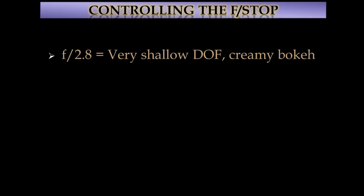Controlling the f-stop: f/2.8 is a very shallow depth of field — it gives a creamy bokeh. What does that mean? At f/2.8, you're actually letting in the most light your lens can let in. Some lenses are even f/1.4, but most are f/2.8. It allows a lot of light in, but the more light you let in, the narrower your depth of field is going to be. That's the bad news. The good news is what becomes out of focus creates what's called a bokeh — and bokeh is a critical word for macro photographers, particularly artistic macro photographers.